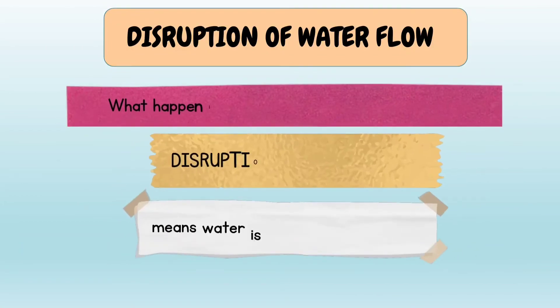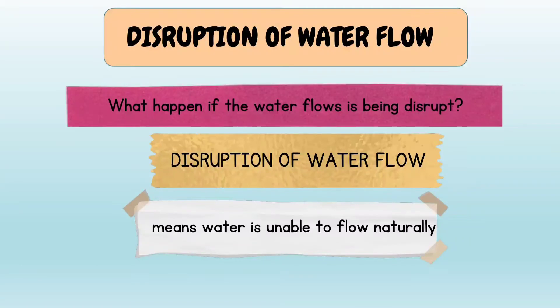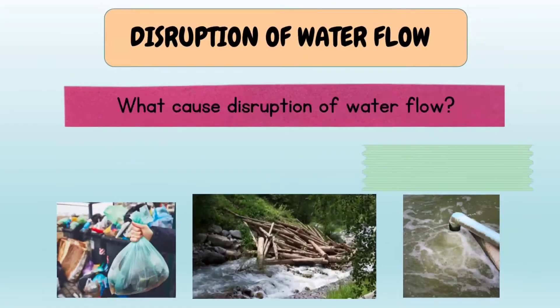What happens if the water flow is being disrupted? Disruptions of water flow means water is unable to flow naturally.